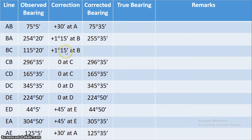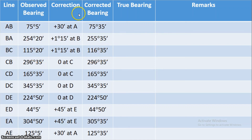For line BA, the corrected backbearing: since 75 degrees 35 minutes is less than 180 degrees, we add 180 degrees to get 255 degrees 35 minutes. The observed value for BA was 254 degrees 20 minutes. Corrected minus observed: 255 degrees 35 minutes minus 254 degrees 20 minutes equals positive 1 degree 15 minutes correction at station B. Applying this to BC gives a corrected bearing of 116 degrees 35 minutes.